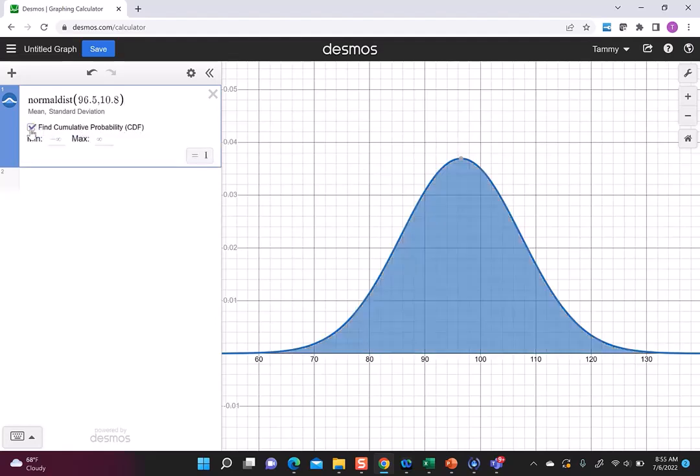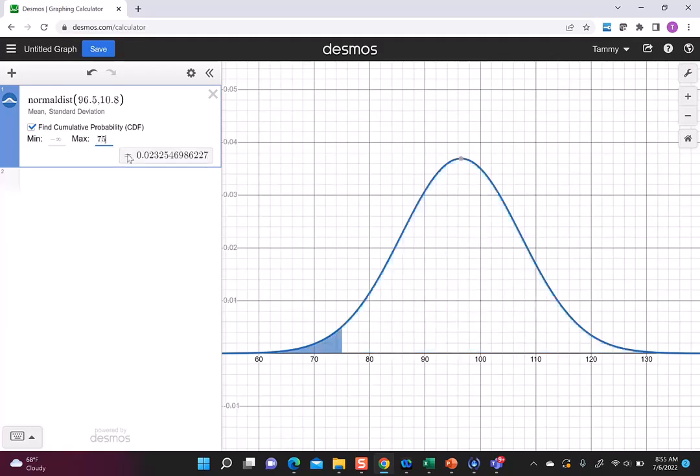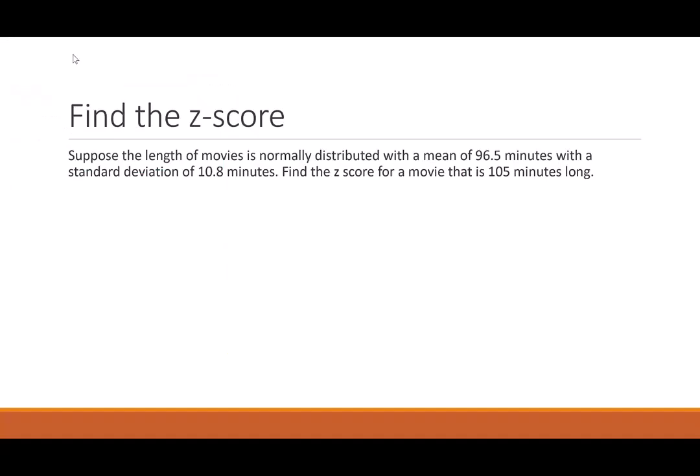And I'm going to click this find cumulative so I can put in here at this 75. So what 75 does, it tells me the percent of movies that are 75 minutes long or shorter. So when I look here, I got this 0.02325 that says about 2.3% of movies are less than 75 minutes, according to this data that I gave you. You can also see on here that this is in the tail region over on the left. So it is about two standard deviations to the left of that mean.